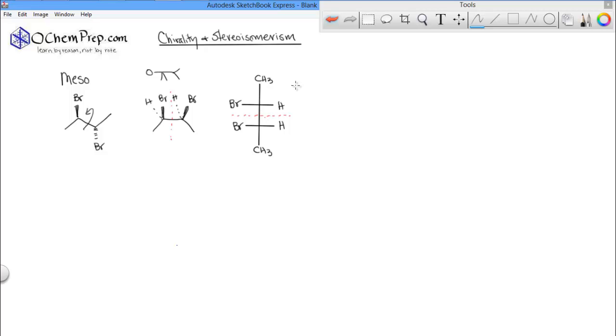Any molecule that has a plane of symmetry cannot be chiral. Its enantiomer will be completely superimposable. I should say it's not its enantiomer, its mirror image will be completely superimposable because an enantiomer has to be a mirror image that is non-superimposable.